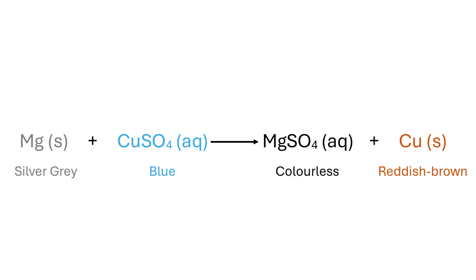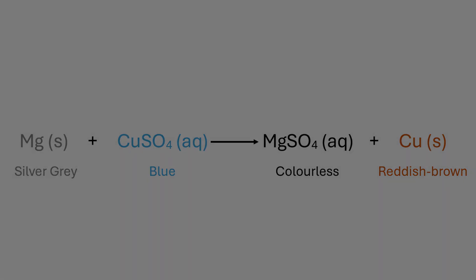The end result is an exchange in the position of magnesium vis-à-vis copper. Magnesium metal goes into solution and combines with the sulfate ions to eventually form magnesium sulfate solution, which is the clear, colorless liquid in the test tube. The copper ions get deposited as reddish-brown elemental copper.